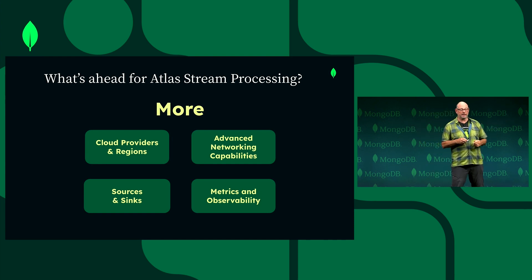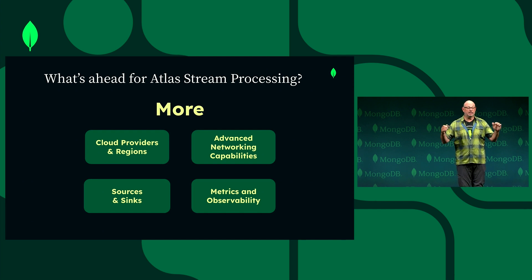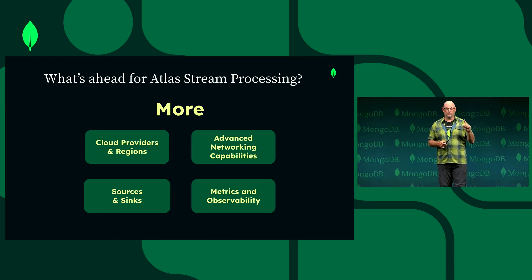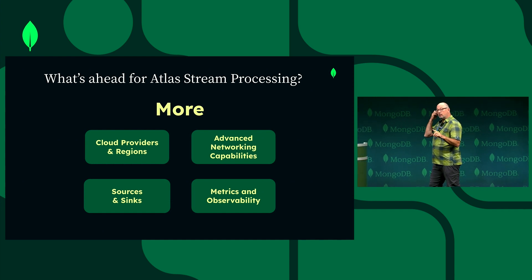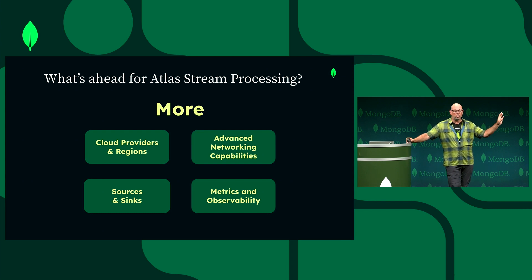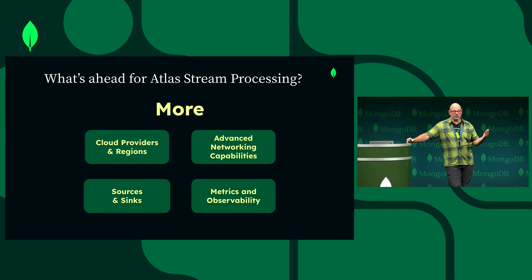Those are some advanced things. What is ahead for stream processing? We just got started — two years of work, half to three quarters of a year in preview, and today we're at GA. Number one: more cloud providers and regions. Today we're in AWS, but Azure and GCP are coming very soon. We're adding more advanced networking capabilities like VPC peering and private link. We're adding more sources and sinks — Kinesis is coming. And metrics and observability are going even further: more Atlas integration, graphs and charts.